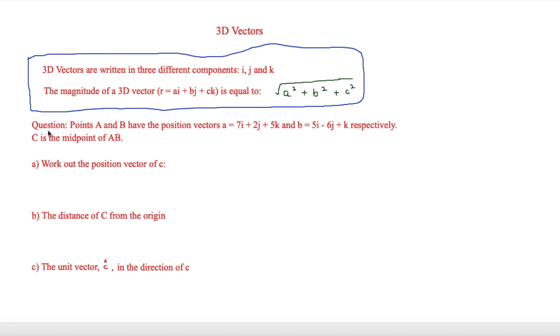So the first question we have here is points A and B have position vectors a equals 7i plus 2j plus 5k and b equals 5i minus 6j plus k respectively. And if you don't understand this notation then look at my vectors video. But c is the midpoint of AB.